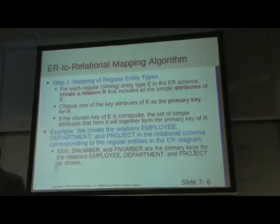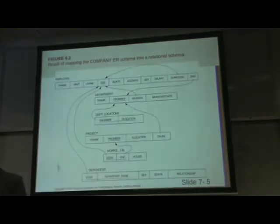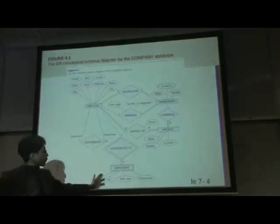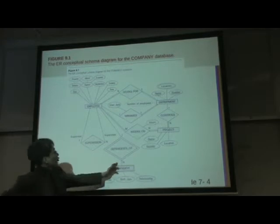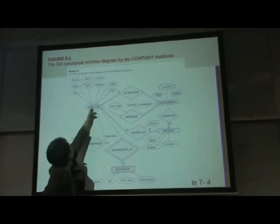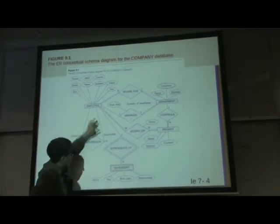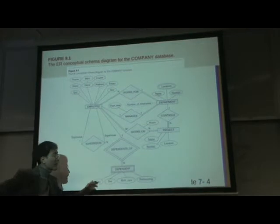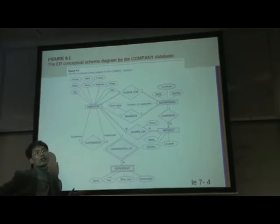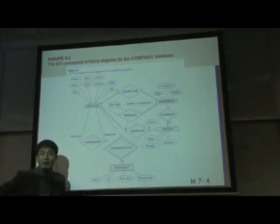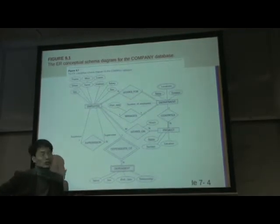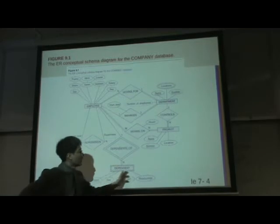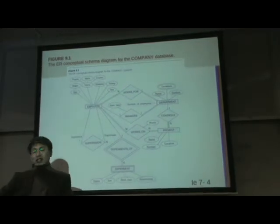For example, in this example, what can be the primary key? Using this one — borrow SSN. So SSN plus dependent name will be the composite primary key. Create this.